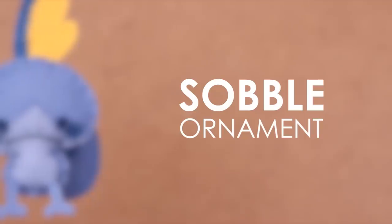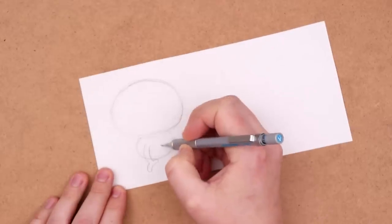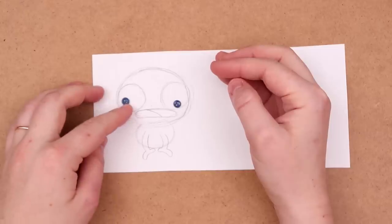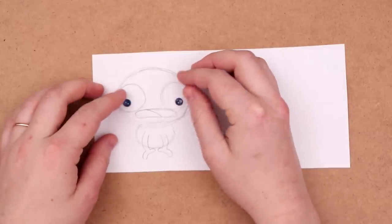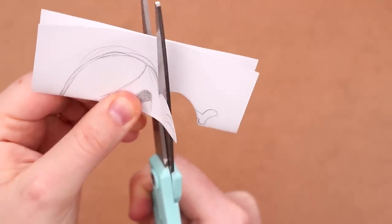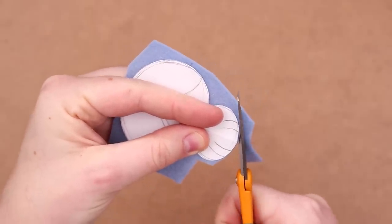Moving on to Sobble, one of the most popular starters this generation. Starting off by just sketching our ornament, planning things out. I knew that Sobble had the biggest head and the smallest body of all three starters, so I exaggerated this chibi style even more by making the head bigger and the body even smaller.